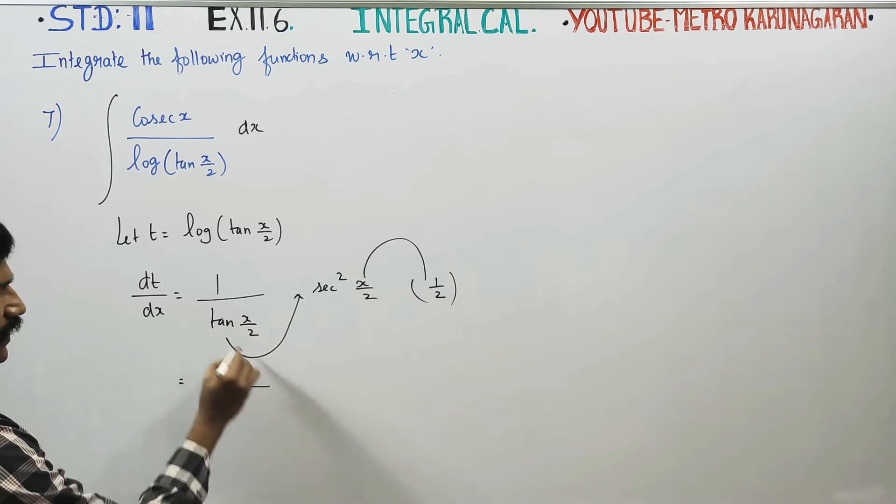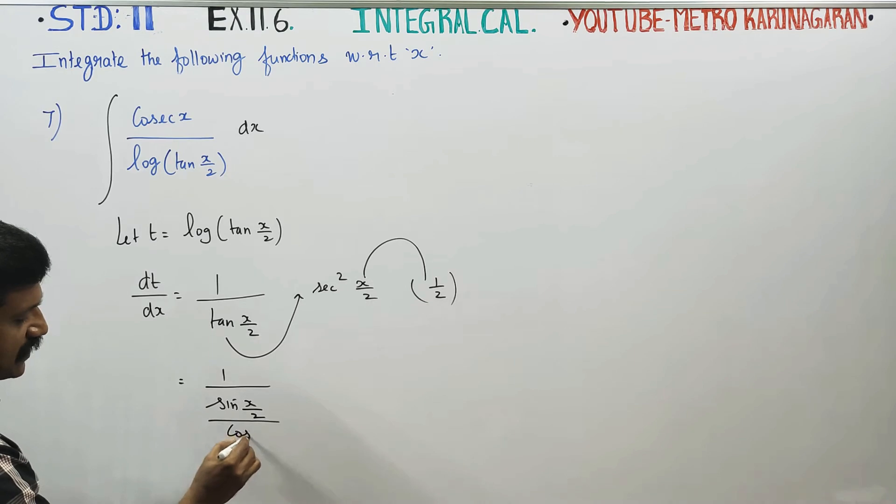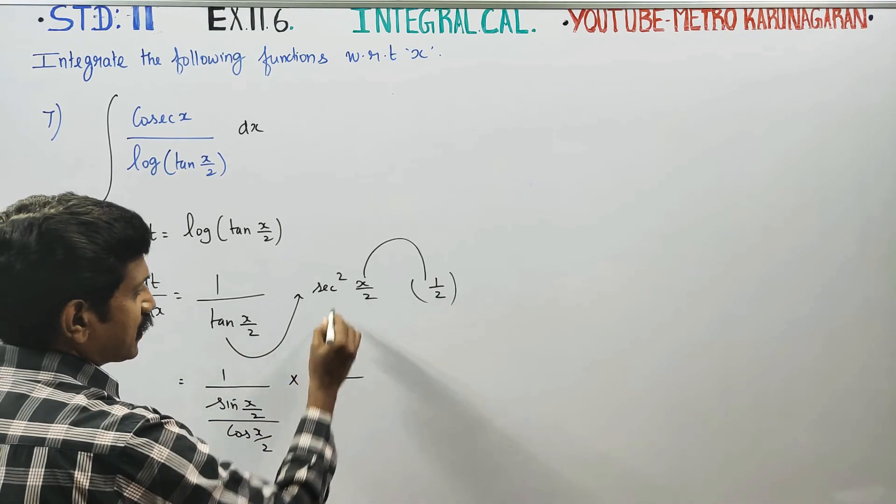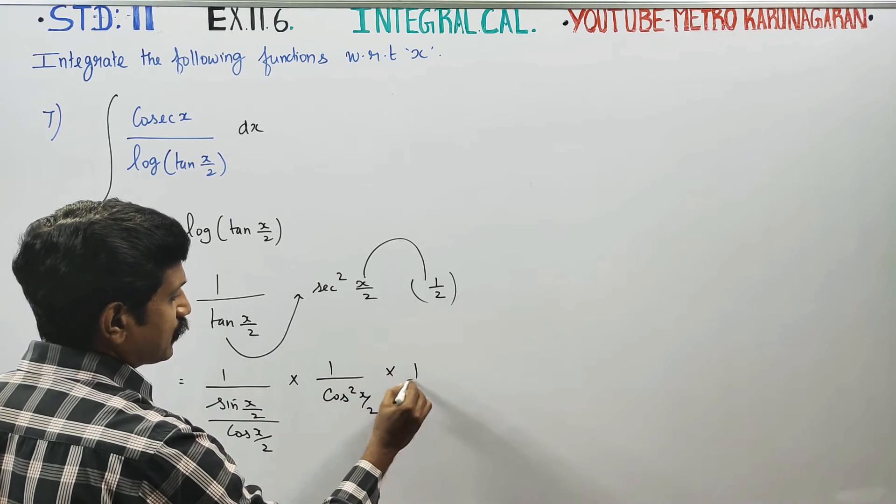1 by tan can be written as sin x by 2 divided by cos x by 2. Sin by cos. Secant square can be written as 1 by cos square x by 2 into 1 by 2.